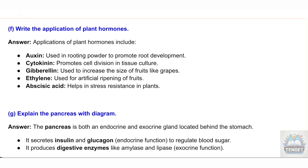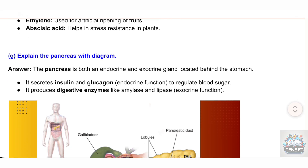Answer: Applications of plant hormones include — Auxin: used in rooting powder to promote root development; Cytokinin: promotes cell division in tissue culture; Gibberellin: used to increase the size of fruits like grapes; Ethylene: used for artificial ripening of fruits; Abscisic acid: helps in stress resistance in plants.